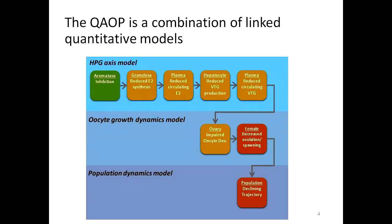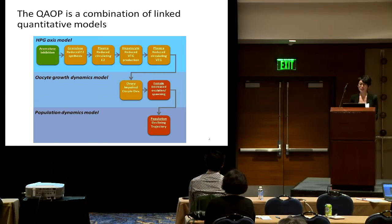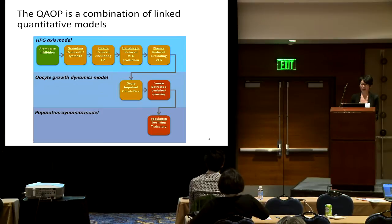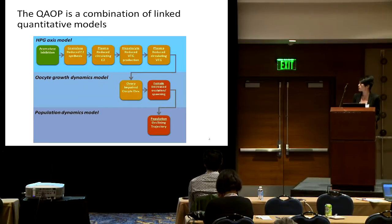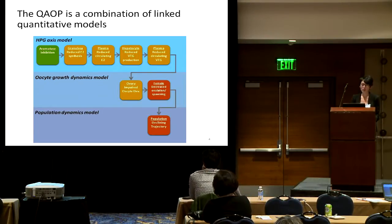The QAOP is a combination of linked quantitative models. We utilize the same framework, but we have three linked models. Starting with the HPG axis model, which describes the molecular initiating event of aromatase inhibition, followed by several key events such as the production of estradiol and vitellogenin and their concentration in plasma. Using the output from the HPG axis model, vitellogenin concentration in plasma is the input for our oocyte growth dynamic model, which performs predictions for ovulation and spawning behavior. With the output of the oocyte growth dynamic model, the population dynamic model performs predictions for population trajectory.